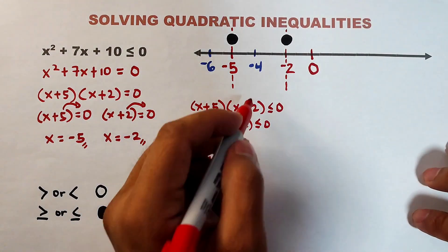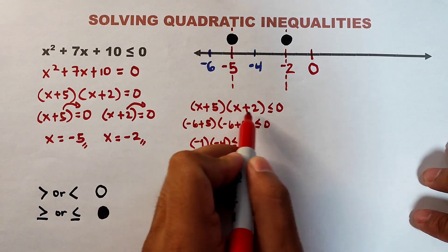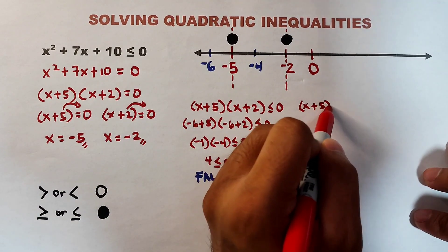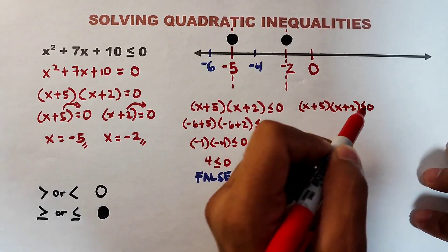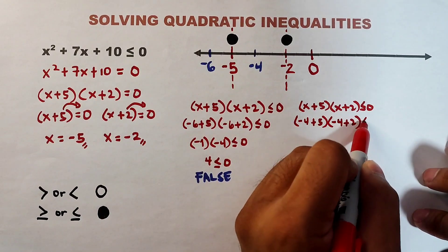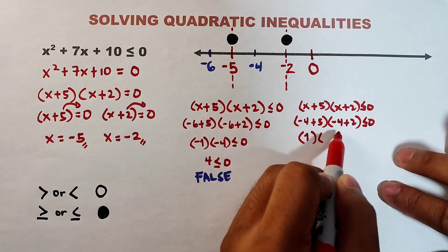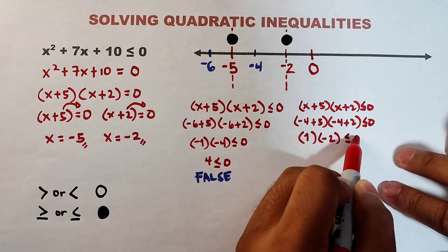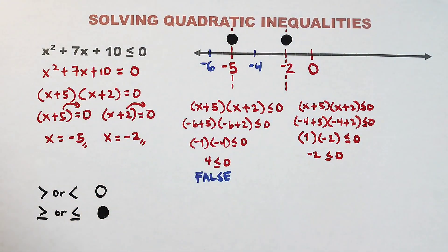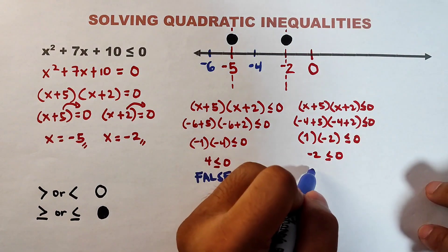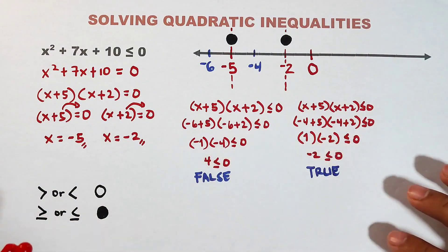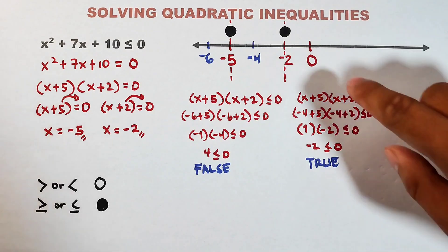Next, let's use the second representative x = -4. We have (-4 + 5)(-4 + 2) ≤ 0, which is (1)(-2) ≤ 0, giving -2 ≤ 0. Is this statement true or false? This one is a true statement because negative two is less than zero.